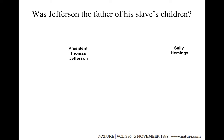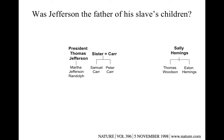Some of Sally Hemings' children hid their African ancestry from those around them. Her first child was allegedly called Tom, and the Woodson family believed their ancestor Thomas Woodson was that first child. She had six other children and then her youngest, Eston Hemings. President Jefferson's daughter Martha Jefferson Randolph and her family always maintained it was not the president but rather his nephews, Samuel Carr or Peter Carr, who fathered the children.